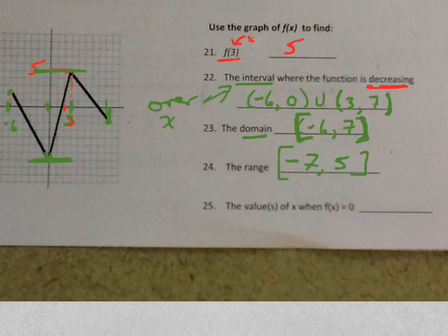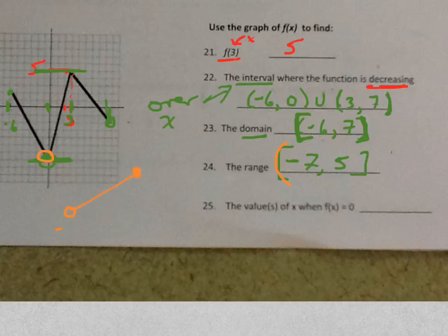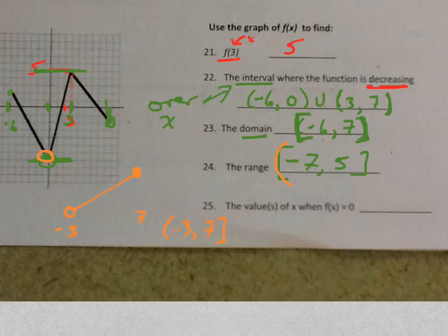When you say included, what do you mean? Those points — negative 7 is included. If it was an open circle here, then it wouldn't be included. At that point, negative 7 wouldn't be included — it would be an open parentheses. So if this is negative 3 and this is positive 7, your interval notation would be negative 3 to 7, including 7 but not including 3. Open brackets means not included; closed bracket means included.